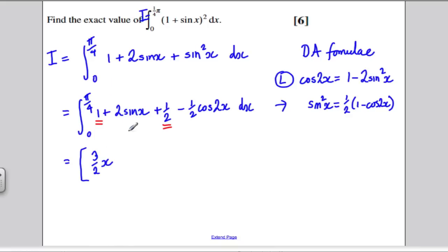Now I'll integrate the 2 sin x. The integral of sin x is minus cos x. So this integrates to -2 cos x. And then the integral of -½ cos 2x would be -¼ sin 2x, and all of that is between 0 and π over 4.